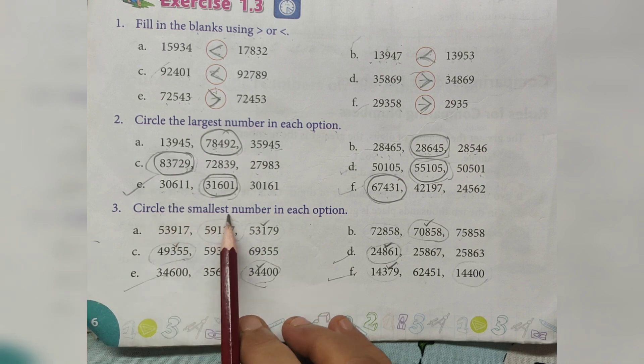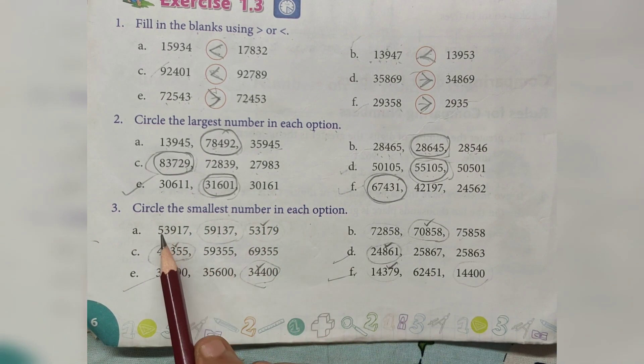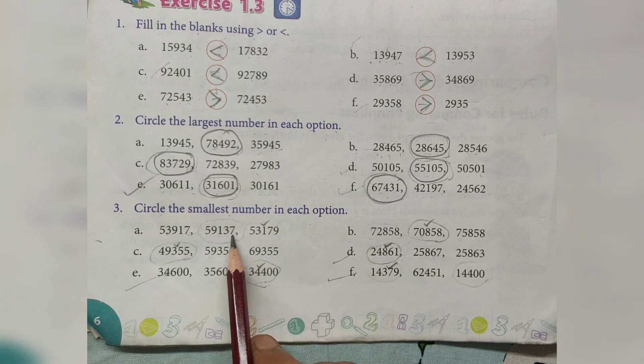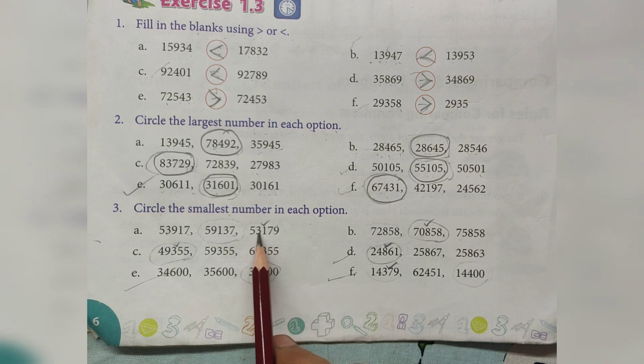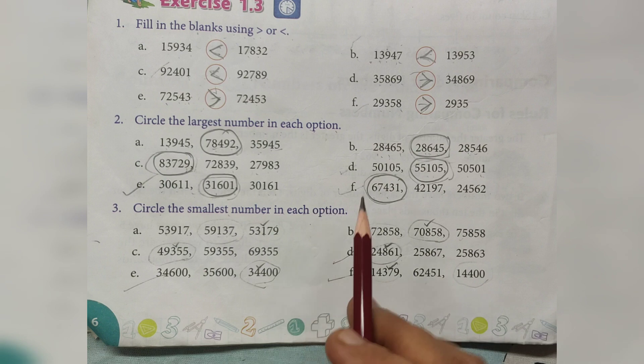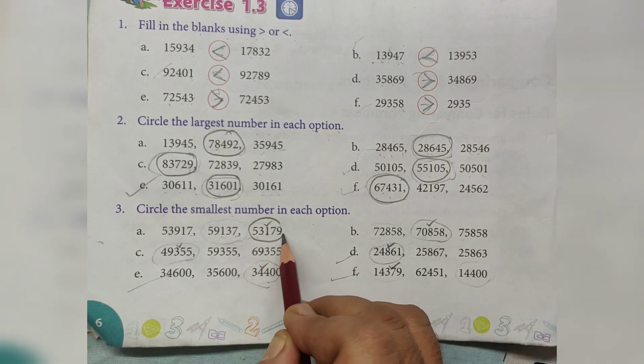Circle the smallest number in each option. 53,917, 59,137, 53,179. Circle the smallest number, 53,179.